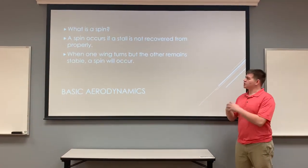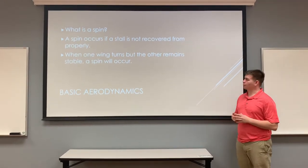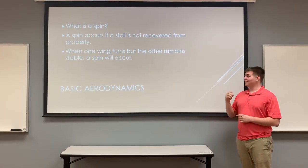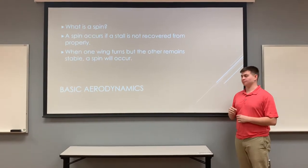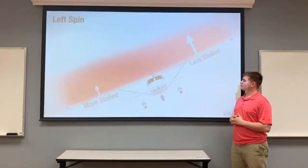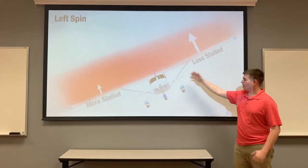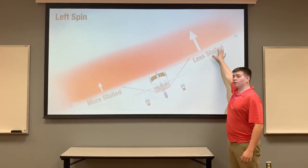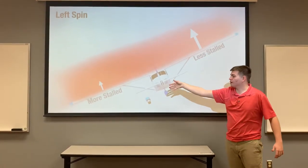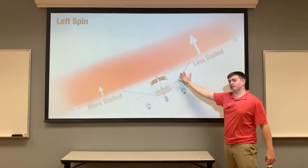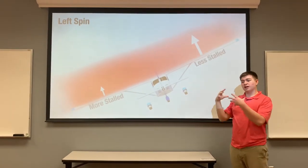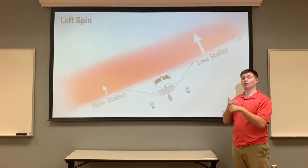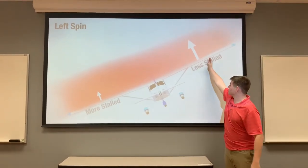What is a spin? A spin occurs if a stall is not recovered from properly. When one wing stalls but the other remains stable, a spin will occur. You can see here this forward view of the plane — if the left wing is less stalled than the right wing, then when a plane ends up in a stall and starts moving downwards, if one wing is more stable than the other, your plane will start to spin while moving downward.